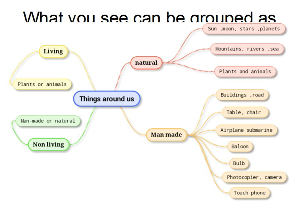Among natural things, the sun, the moon, the stars and the planets are one group — very big things. Still smaller ones are the mountains, the rivers and the streams. Still smaller than those natural things are the plants and animals.